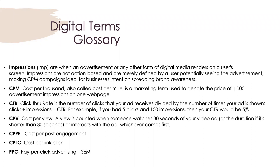An impression is when an advertisement or any other form of digital media renders on a user's screen. Impressions are not action-based — they're merely defined by a user potentially seeing the advertisement, making CPM campaigns ideal for brand awareness. A CPM is a cost per thousand (or cost per mil) — the price of 1,000 advertisement impressions. For example, YouTube costs about $30 per CPM, meaning $30 per thousand views.